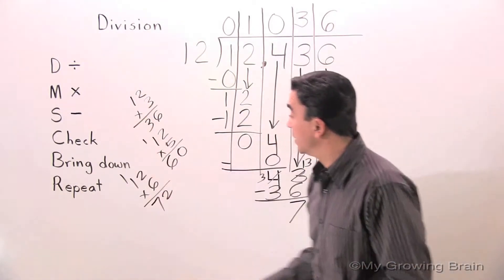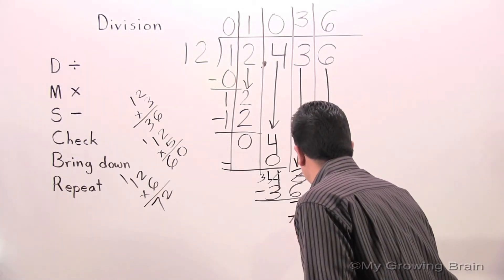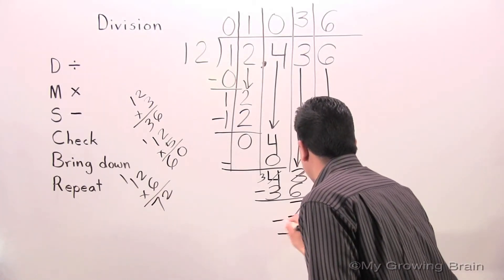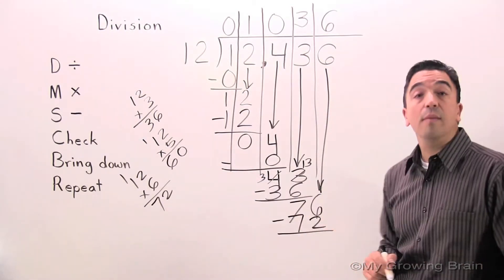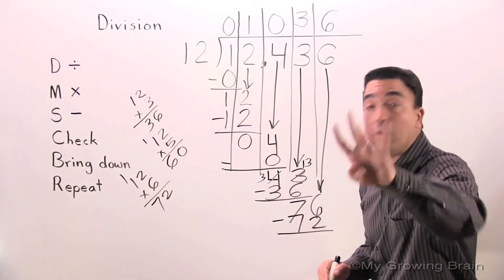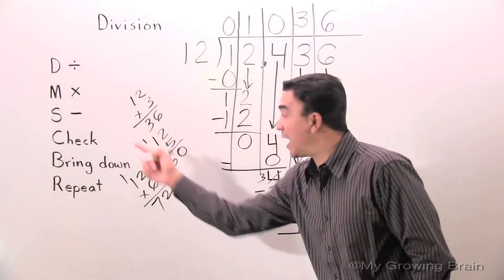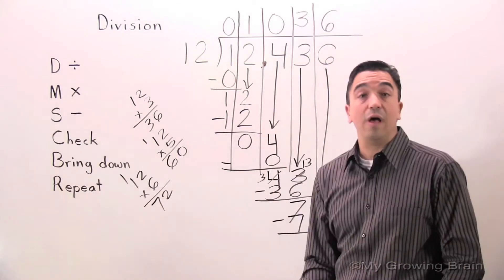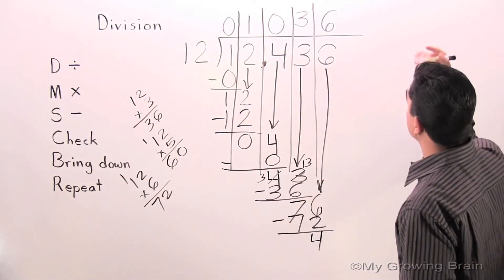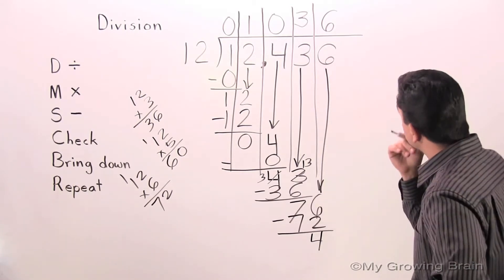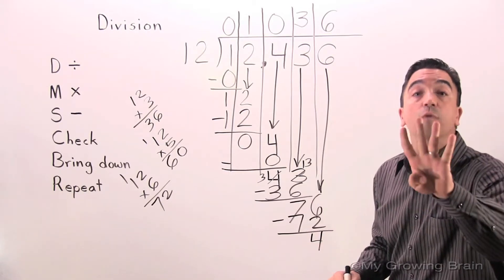Multiply: 12 times 6 equals 72. Next step: Subtract. 76 minus 72 equals 4. Next step: Check — 4 is less than 12. Keep on going. Bring down — there's nothing to bring down. Therefore, we have a remainder of 4.